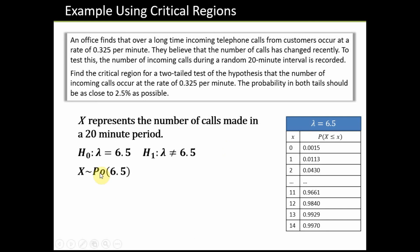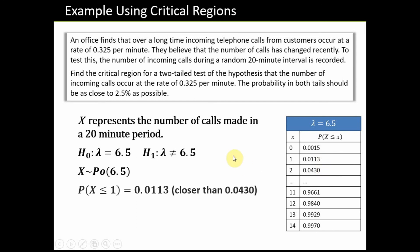We assume X ~ Poisson(λ = 6.5), so we use the λ = 6.5 column in the tables. For the lower tail, we want the probability to be as close as possible to 0.025. Looking at the table values, a quick bit of mental arithmetic shows that the value at x = 1 is closer to 0.025 than the adjacent value. Hence, x = 1 is our critical value, and the lower critical region is X ≤ 1.